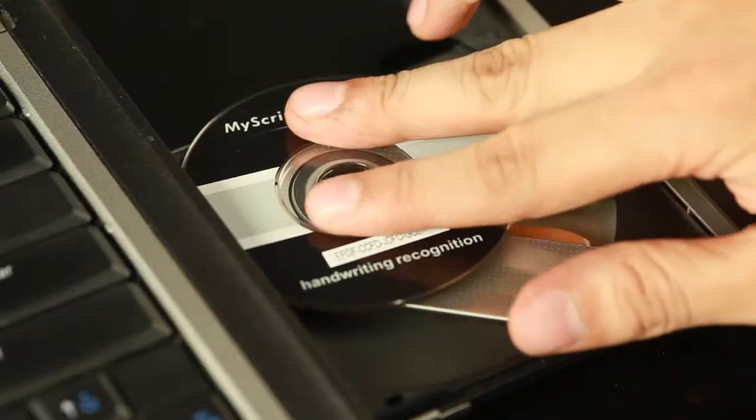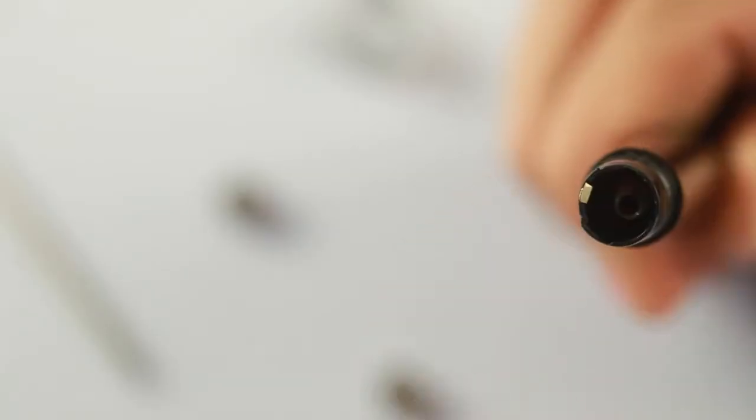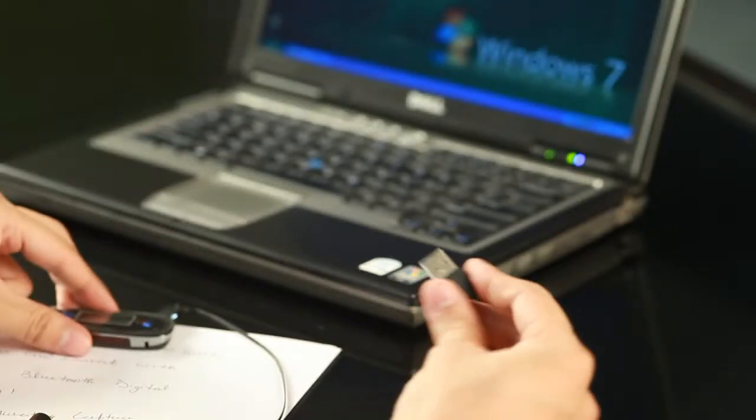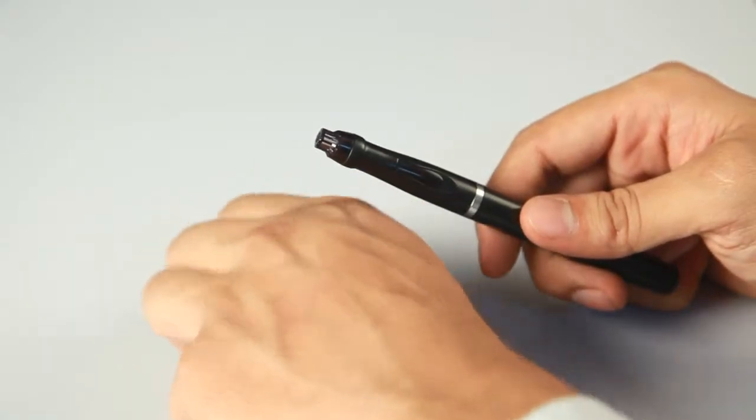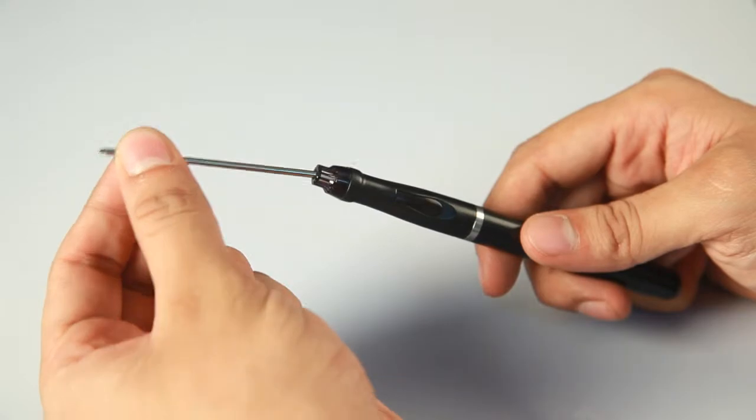Install the software from the CD, insert two SR41 batteries in the pen, and charge the base unit by connecting it to your PC via USB cable. Now slide the new refill into the tip of the pen till it's lodged securely in place and turn on the base unit.